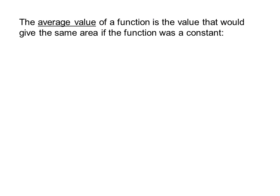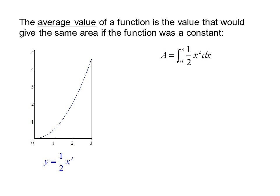The average value of a function is the value that would give the same area if the function was a constant. For example, given the function y equals one-half x squared, the area under the curve is the integral from zero to three of one-half x squared dx.